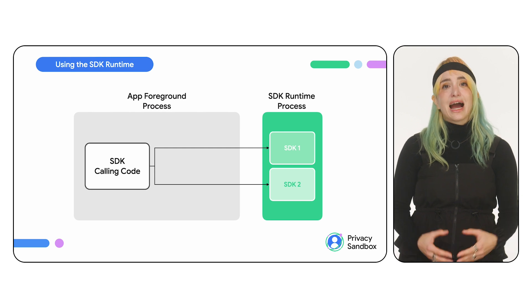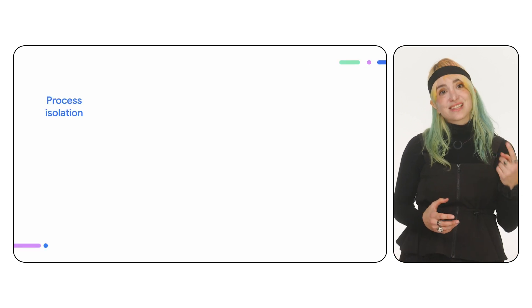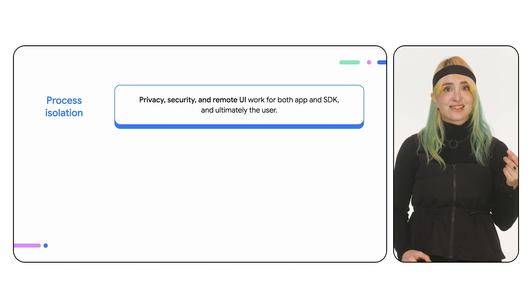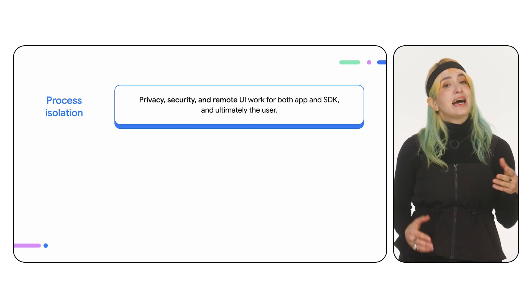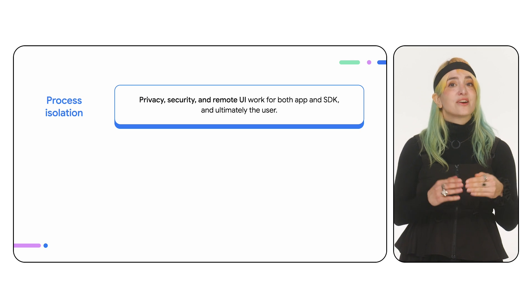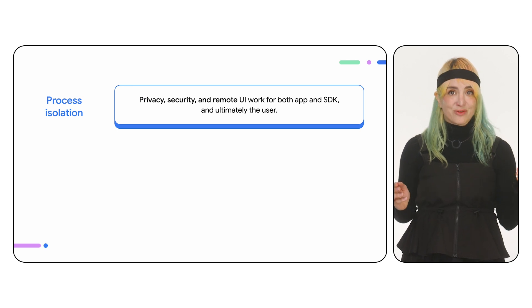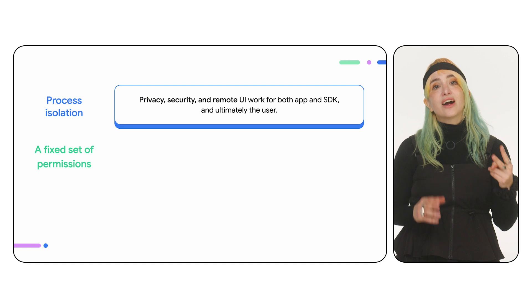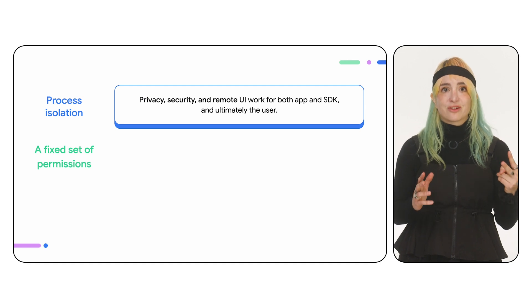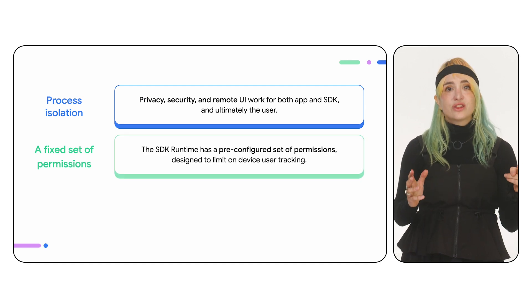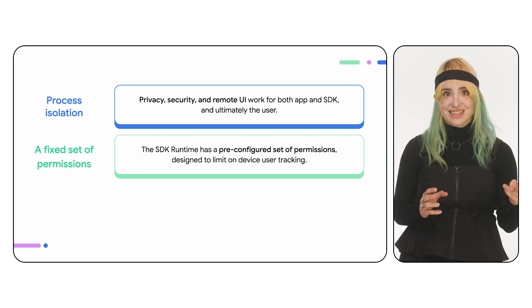So how does this help? First, process isolation increases privacy and security, reducing undisclosed access and sharing. Additionally, ad SDKs control their view hierarchy, which can aid in the prevention of ad fraud. Second, by operating with a predefined set of permissions, the SDK runtime limits on-device user tracking by design.